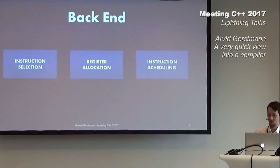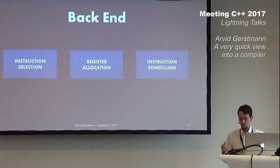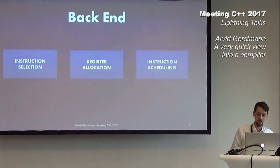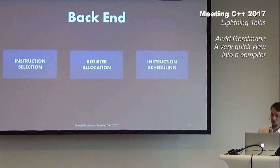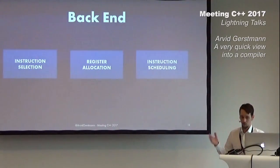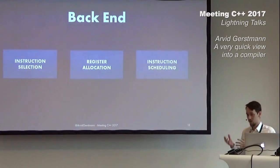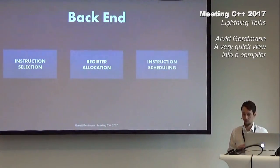Next we come to instruction scheduling. All recent CPU designs have very long pipelines and can execute several instructions in parallel. The instruction scheduler tries to avoid stalling the pipeline by rearranging the order of instructions while maintaining the meaning of the code. This step can either be done before register allocation or after, depending on how you want to implement it.